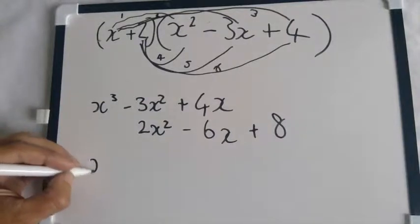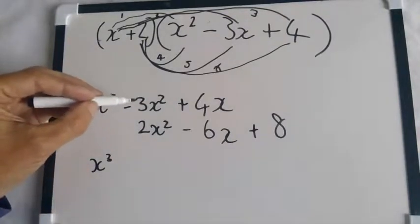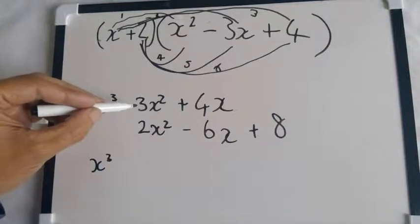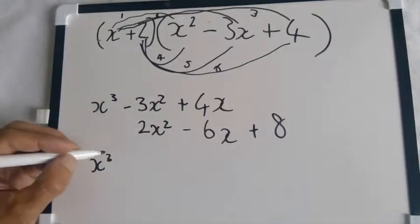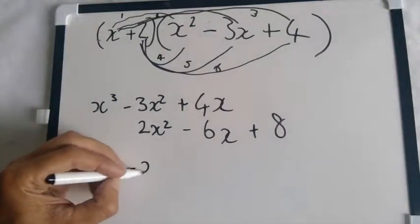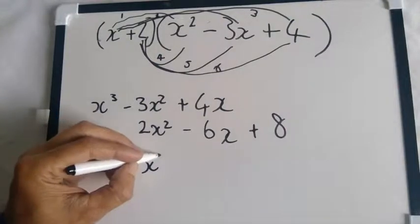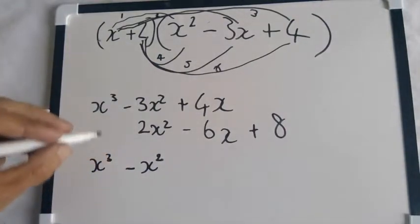So we do have x cubed as our outside term. Now we've got 2x squared minus 3x squared, that will give us a deficit of x squared. So that's a minus x squared. Two positives and three negatives.